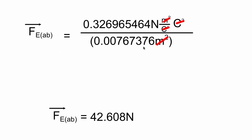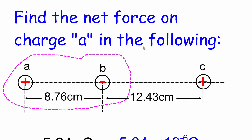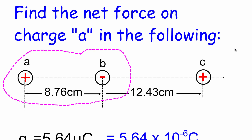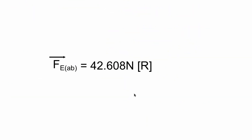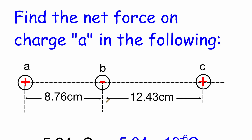I'm not going to be rounding anything yet. Going back to the diagram, B is negative and A is positive, which means B is going to be pulling A towards the right. So the interactive force between A and B is 42.608 newtons to the right.